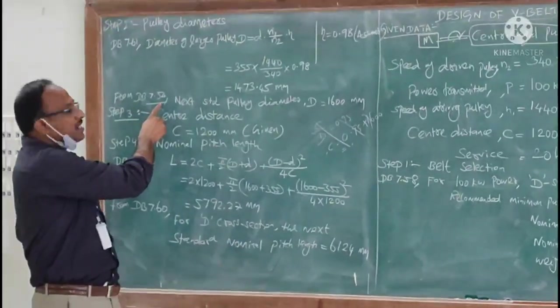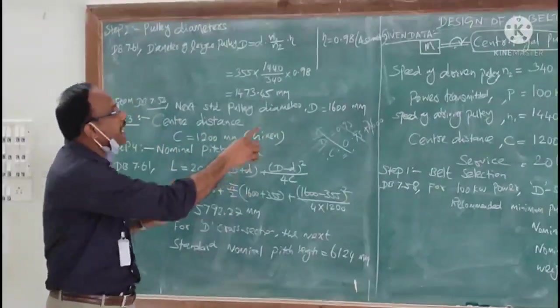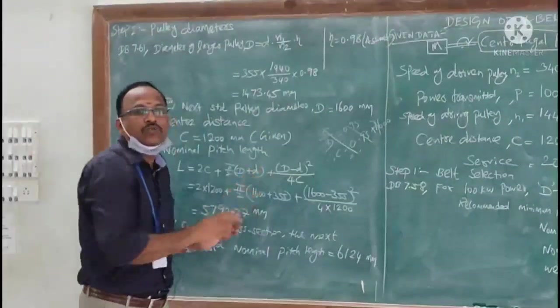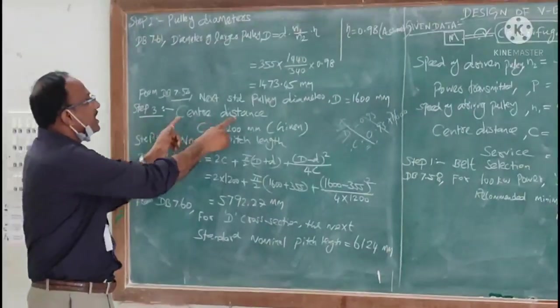From data book page number 7.54, the next standard pulley diameter we can take as capital D is 1600 millimeter. Now we move to step number 3: the center distance.